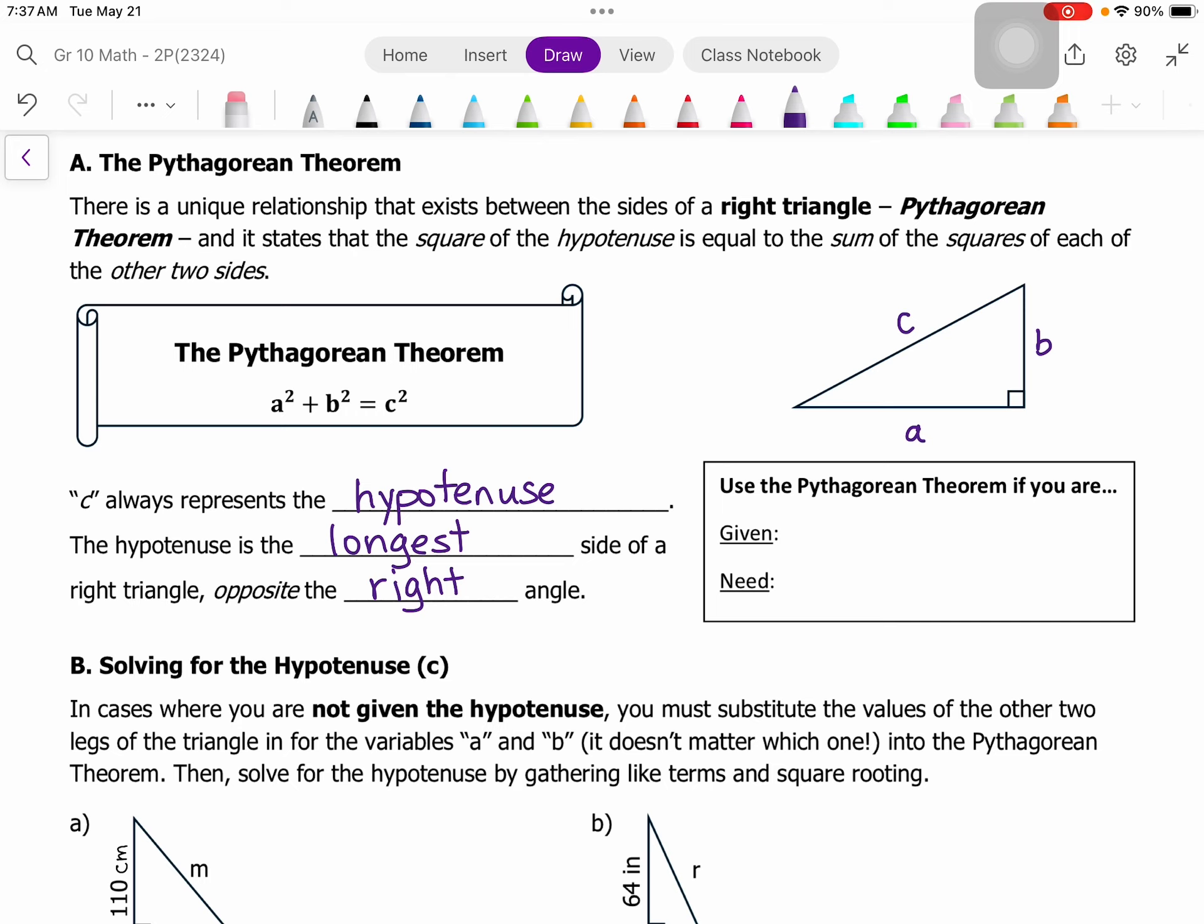So we're going to use Pythagorean Theorem if we know two of our sides in a right triangle and we need the last side.